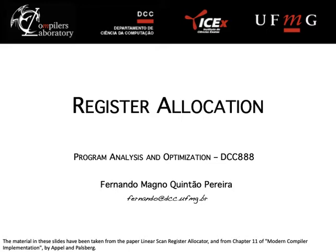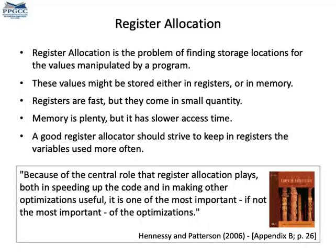Hi, I'm Fernando Pereira from UFMG and today we shall talk about one of the most important compiler optimizations: register allocation. This is the problem of finding locations for the variables in a program. Either these variables are located into registers or they are located in memory.